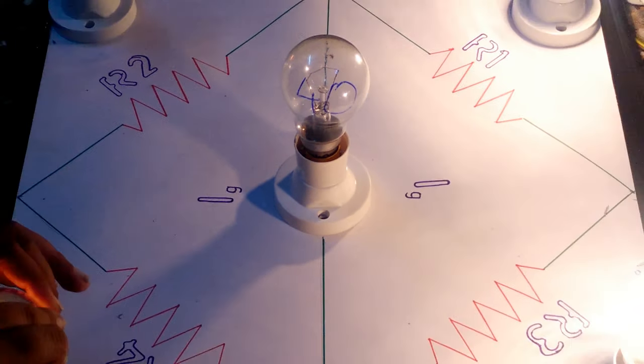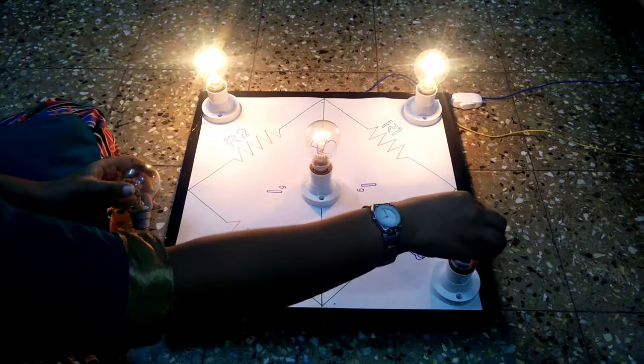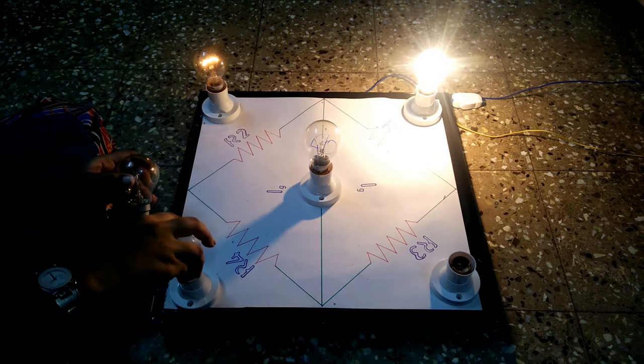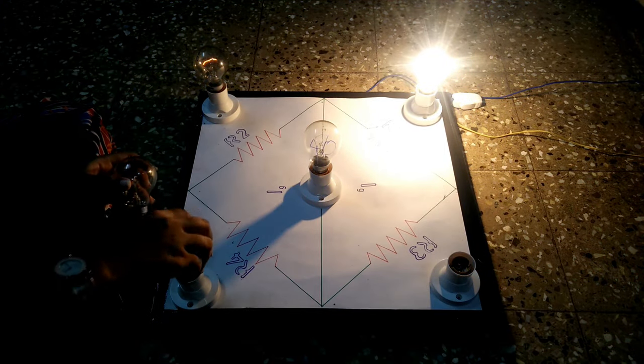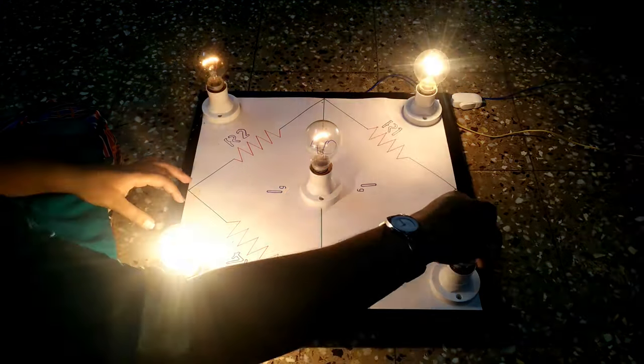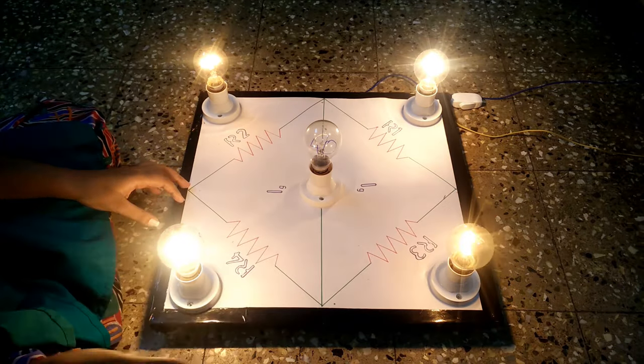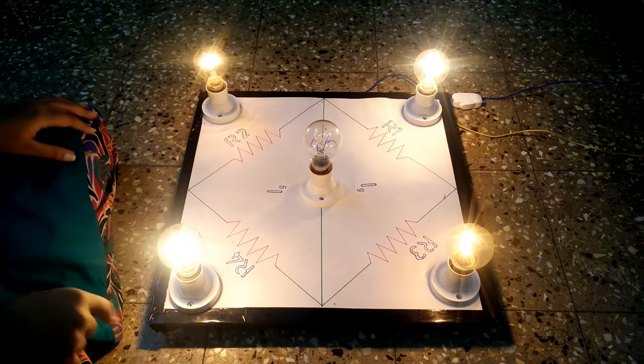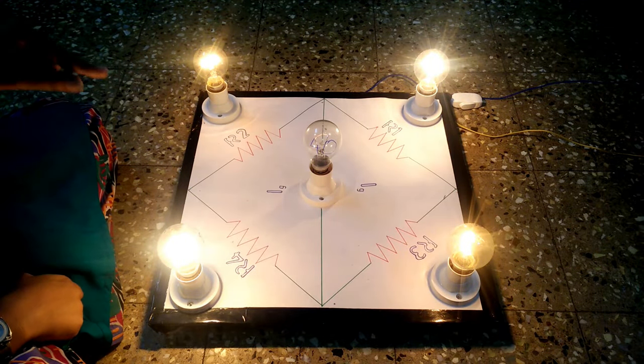But when I exchange the positions of R4 and R3, you can see that these bulbs start glowing and in turn the bulb in the middle also starts glowing.